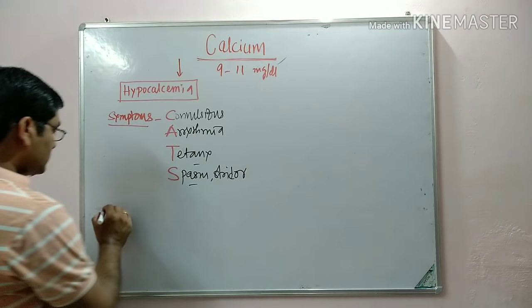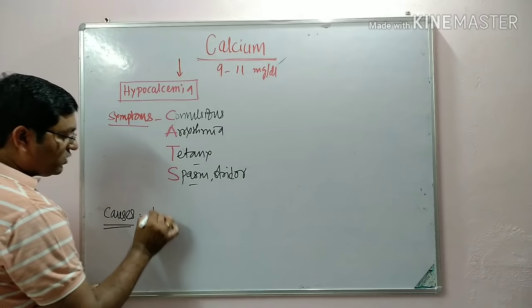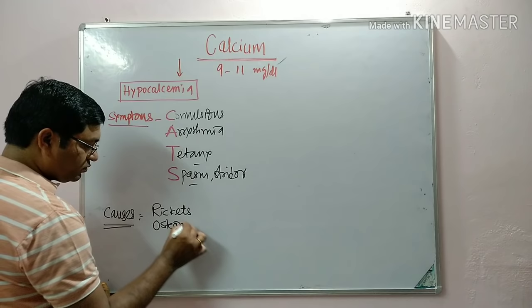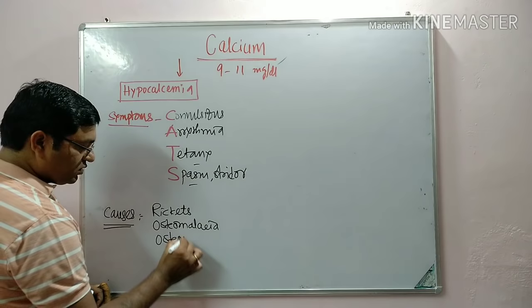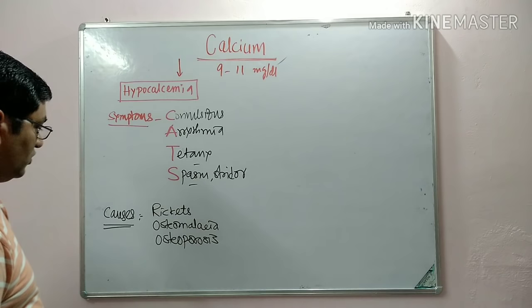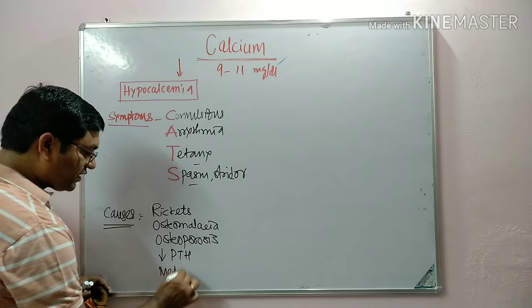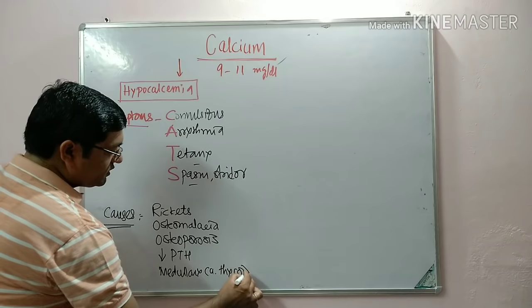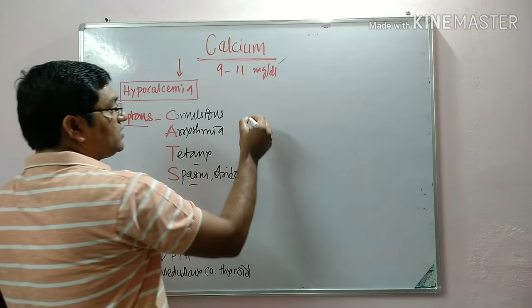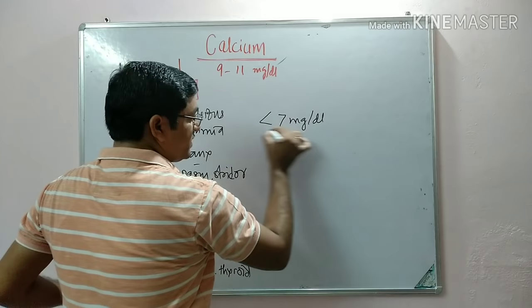Causes of hypocalcemia include rickets, osteomalacia, and in menopausal women, osteoporosis — in which there is decreased bone mineral density. Other causes include decreased parathyroid hormone activity and medullary carcinoma of the thyroid. If serum calcium level goes below 7 mg per deciliter, it is a medical emergency and the condition is known as tetany.